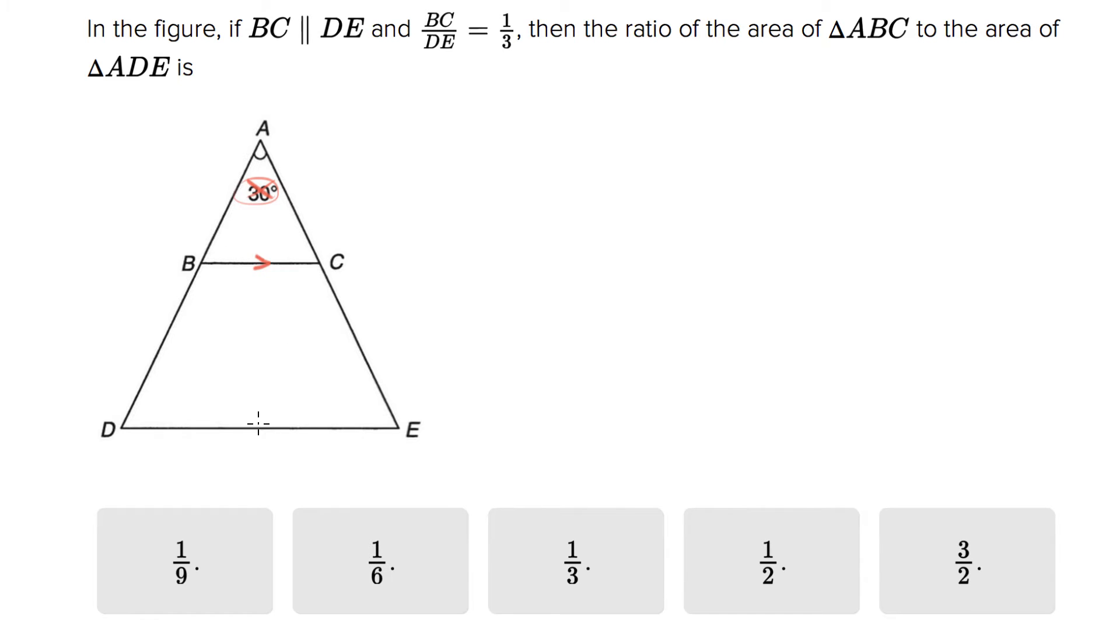They tell you that BC and DE are parallel. What does that tell you? It tells you these triangles are similar, right? ABC and ADE. Those triangles have the same ratios for all their sides.